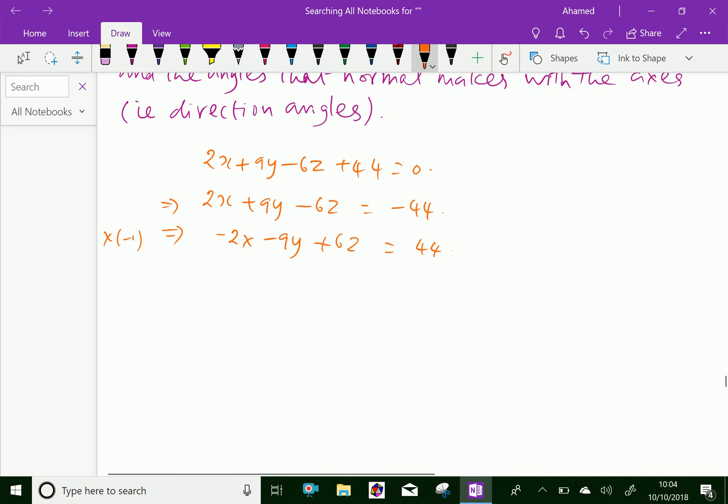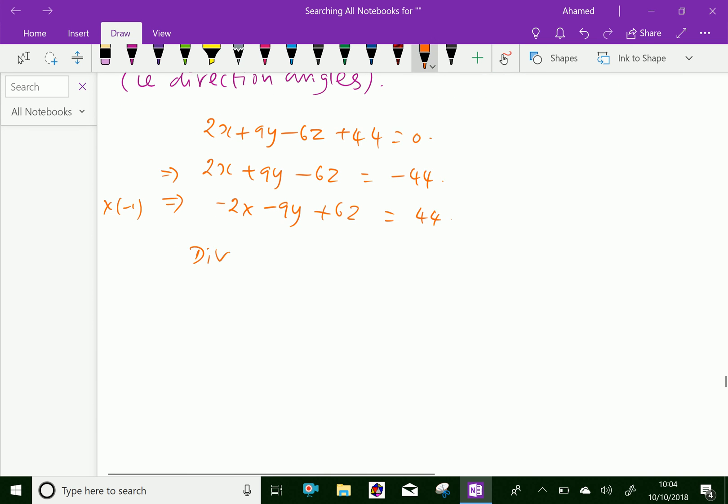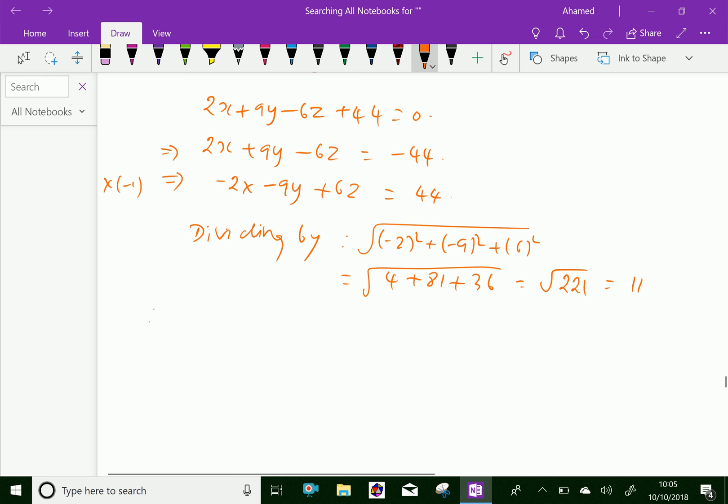Now dividing by the square root of (-2)² plus (-9)² plus (6)², which equals 4 plus 81 plus 36, that is 121. The square root of 121 is 11.